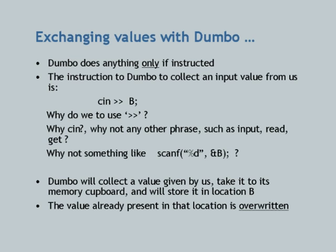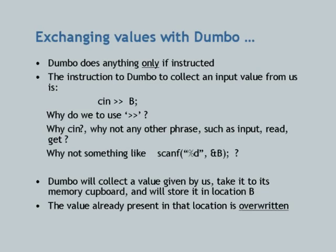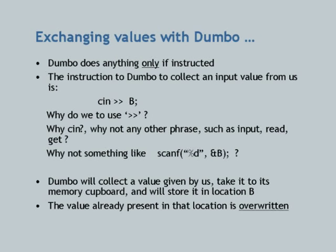One reason we use C++ is to have extremely simplified and easily understandable input-output operations available in the object libraries of C++, which are not available in traditional C programming. C programming input-output is initially very difficult to comprehend. Dumbo will collect a value given by us, take it to its memory cupboard, and store it in location B — whatever existing value was there will be overwritten, since a location can contain only one value at a time.